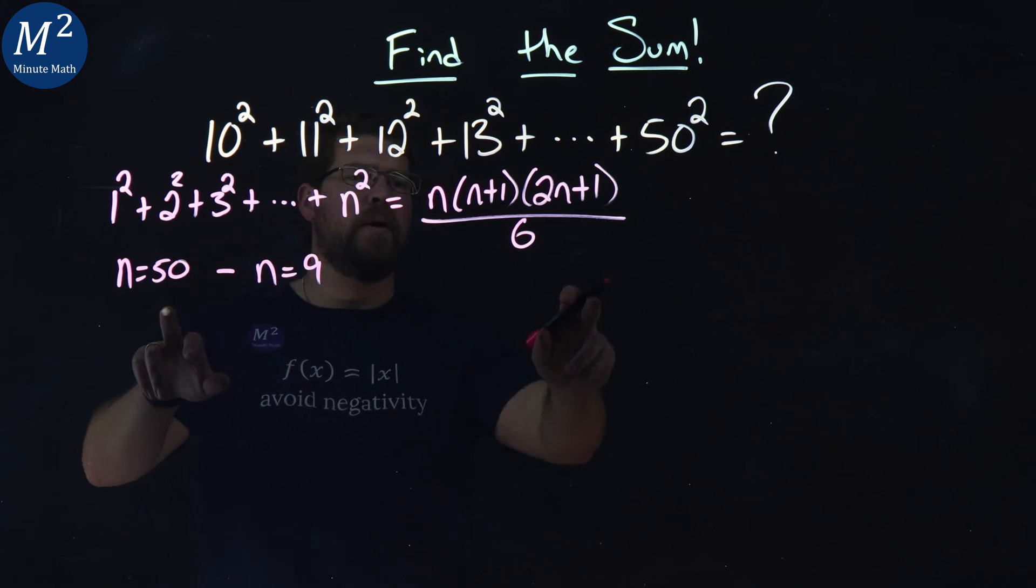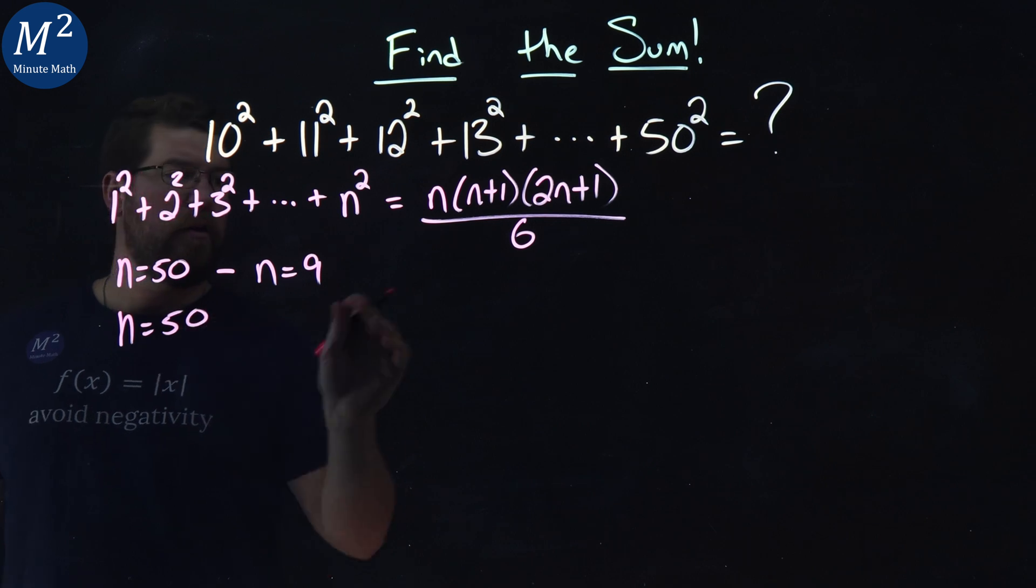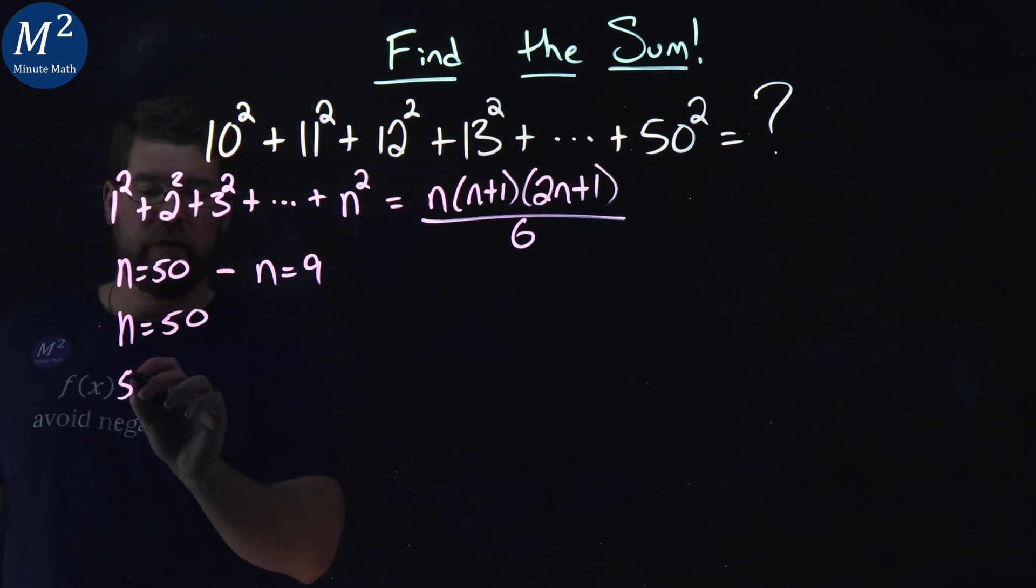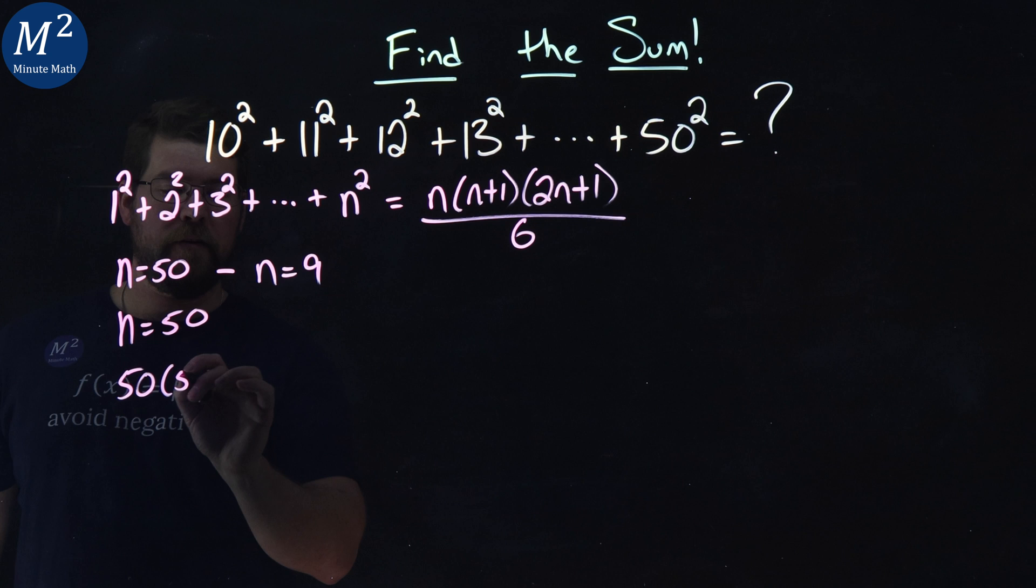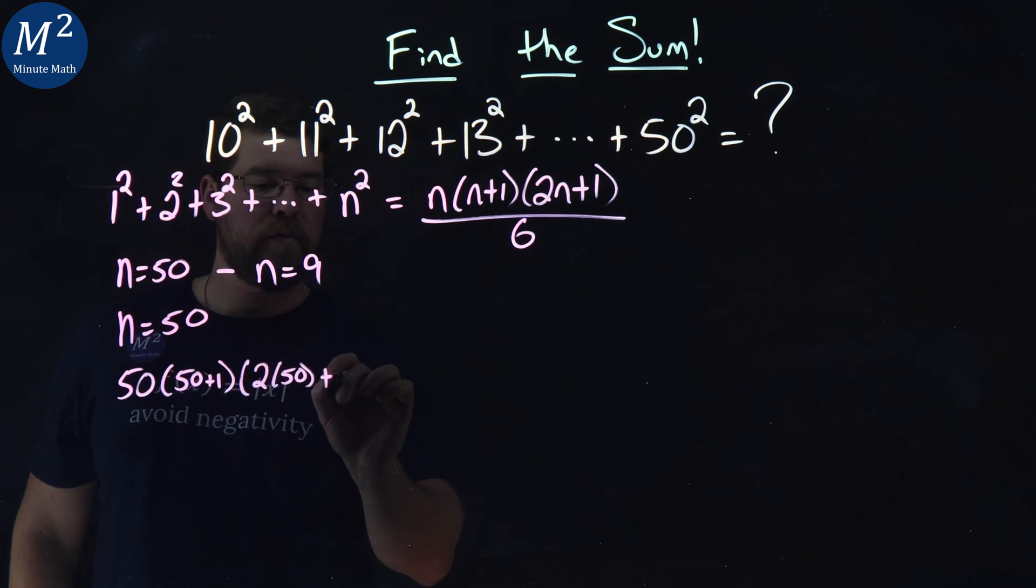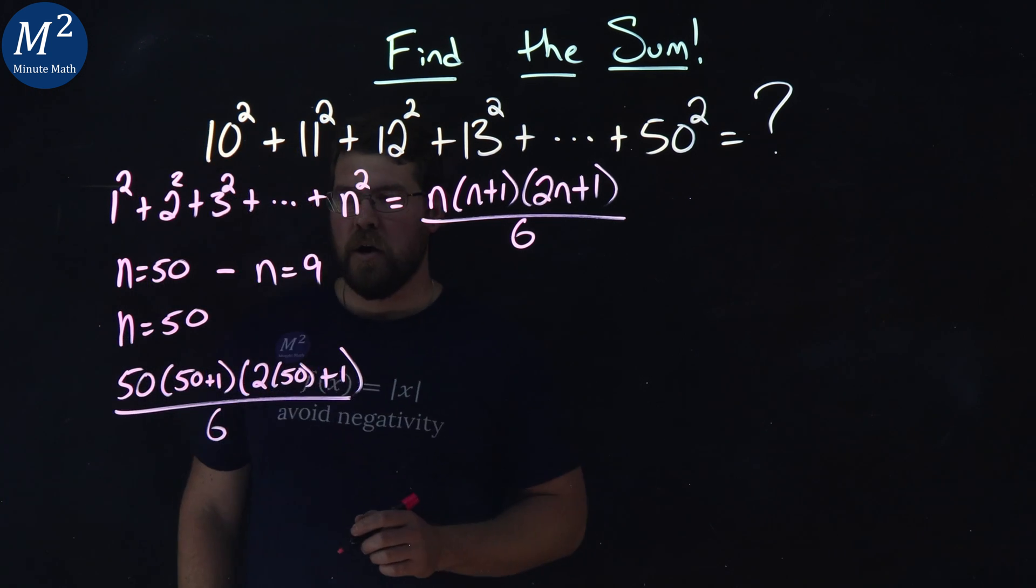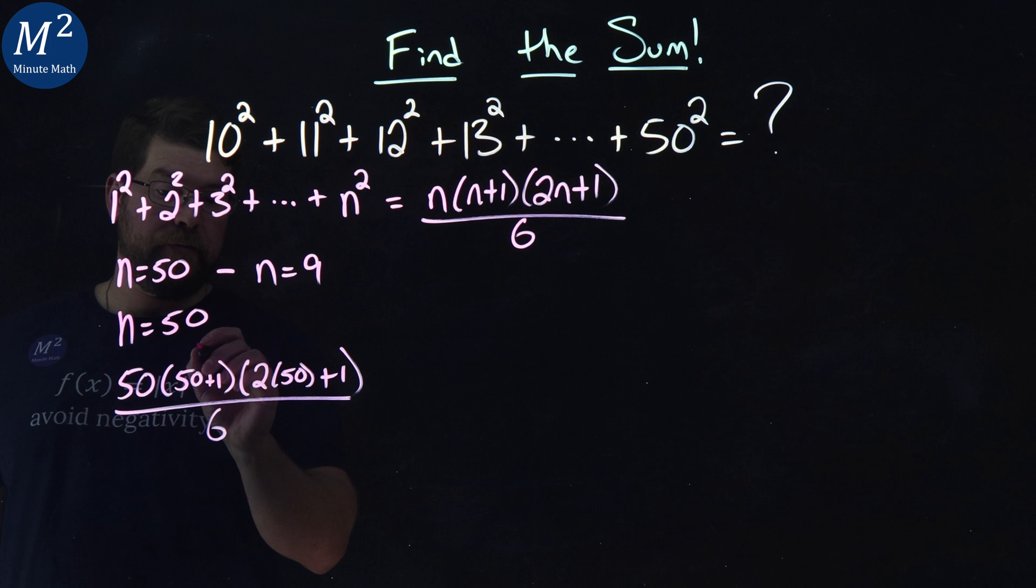All right, let's deal with the first one when n is 50. What is our number? Let's plug into our formula. 50 times (50+1) times (2×50+1) all over 6. All right. Well, 50+1 is 51.